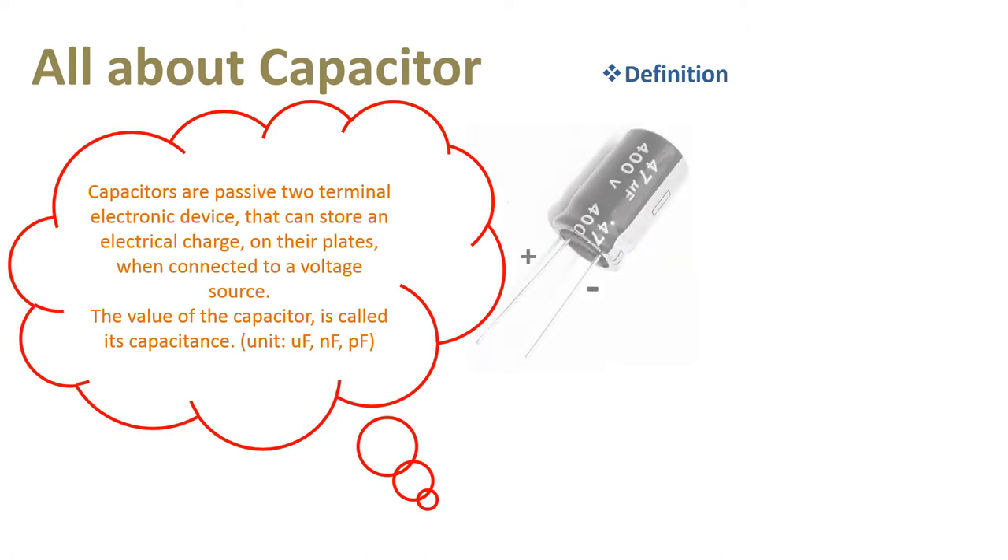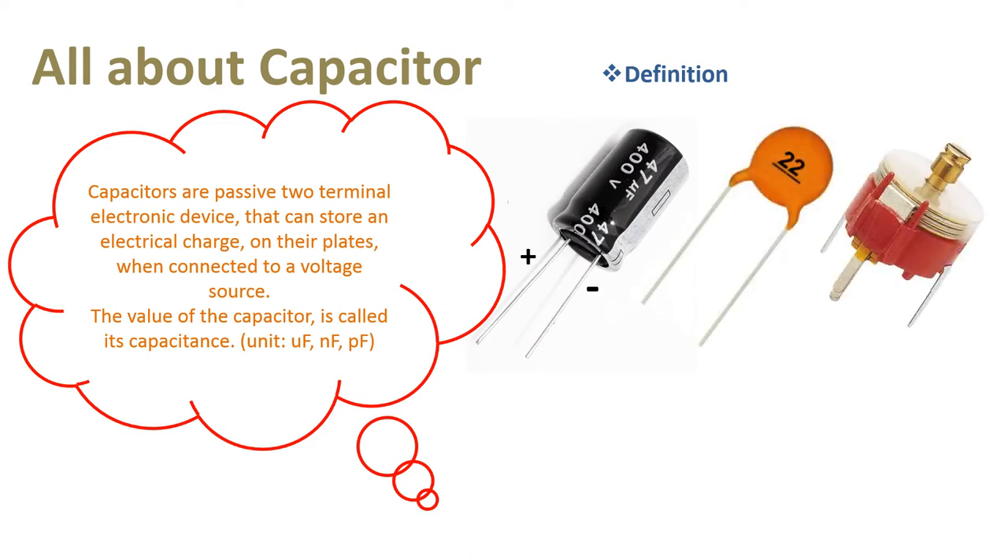Capacitors are of three types: polarized, unpolarized, and variable value capacitors. This is the symbol of a fixed value polar capacitor, fixed value non-polar capacitor, and it is the symbol of a variable value capacitor.